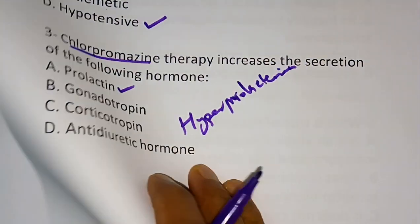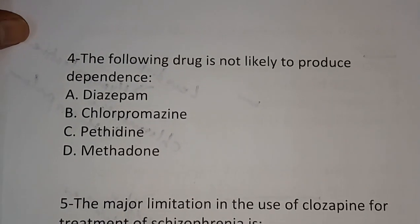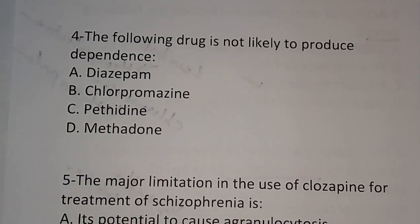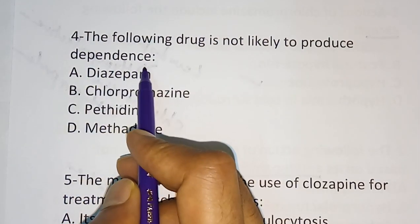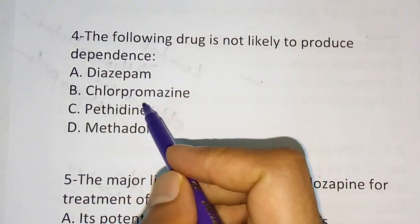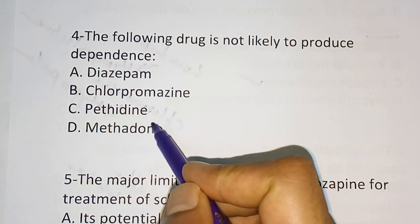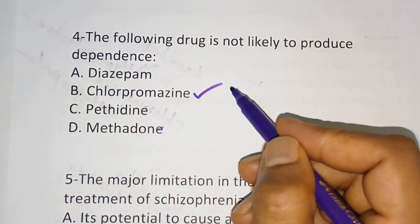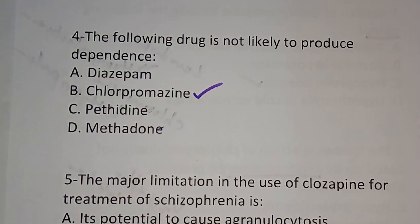Question 4: Which of the following drug is not likely to produce dependence? Options are: diazepam, chlorpromazine, pethidine, methadone. The correct answer is chlorpromazine. Chlorpromazine will not cause any dependence.